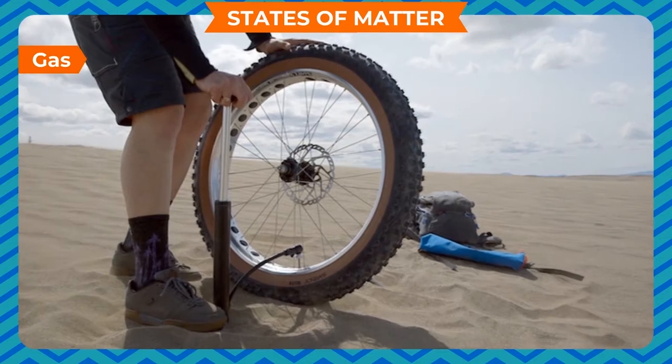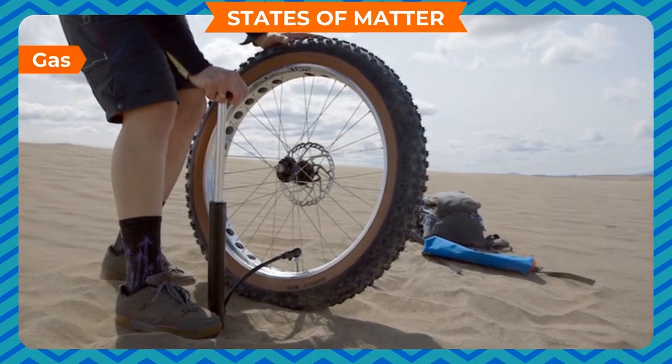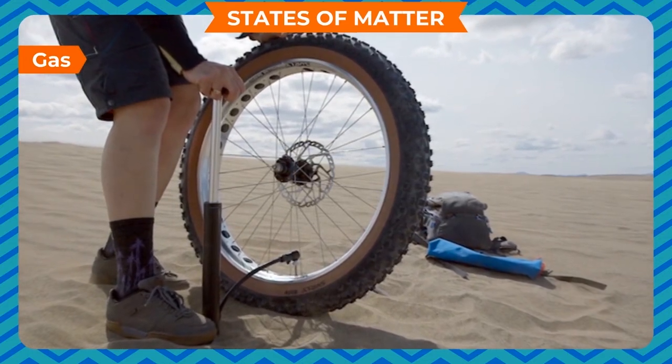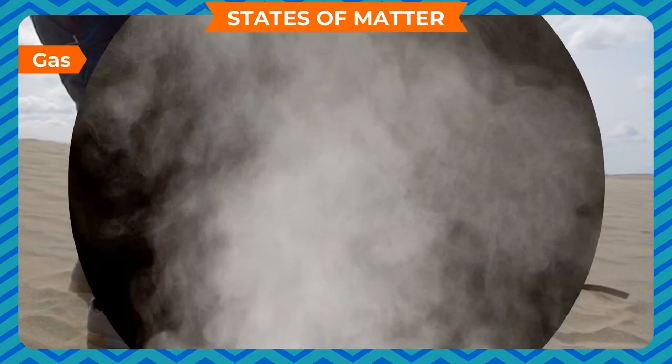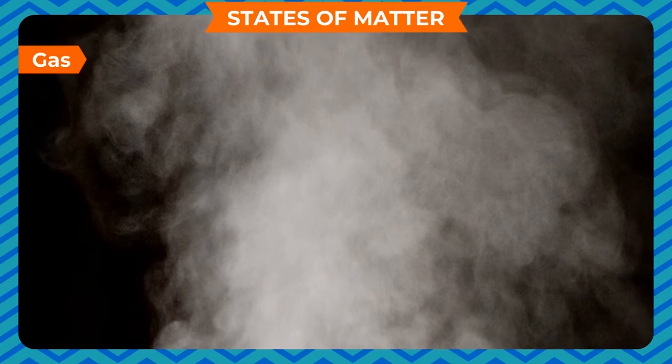If we fill air into a bicycle tube, it occupies the space available inside the tube. Gas does not have a fixed shape or volume.